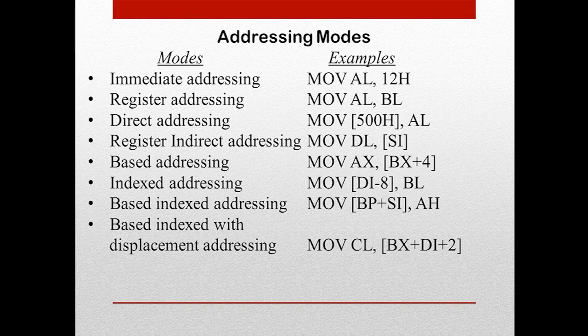The eight addressing modes in the 8086 microprocessor are: immediate addressing, register addressing, direct addressing, register indirect addressing, based addressing, indexed addressing, and based indexed with displacement addressing.